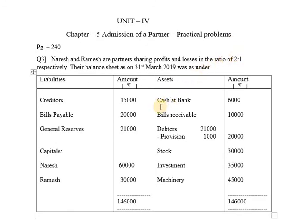On the assets side: Cash at bank 6,000; Bills receivable 10,000; Debtors 21,000 minus provision 1,000, so the value of debtors is 20,000; Stock 30,000; Investments 35,000; Machinery 45,000. The total on the asset side of the balance sheet is also 1,46,000.